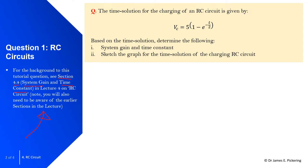In question one, the time solution for the charge of an RC circuit is given. The voltage across the capacitor is equal to five, in brackets one minus the exponential term e to the power of minus t divided by two. Based on that, determine the system gain and the time constant, and then sketch the graph for the time solution for the charging RC circuit.